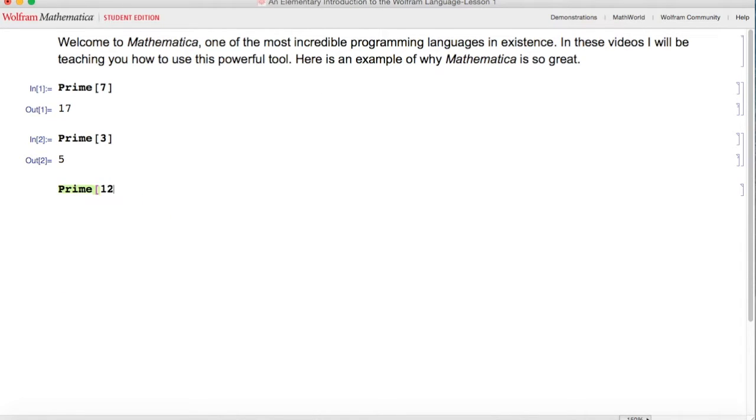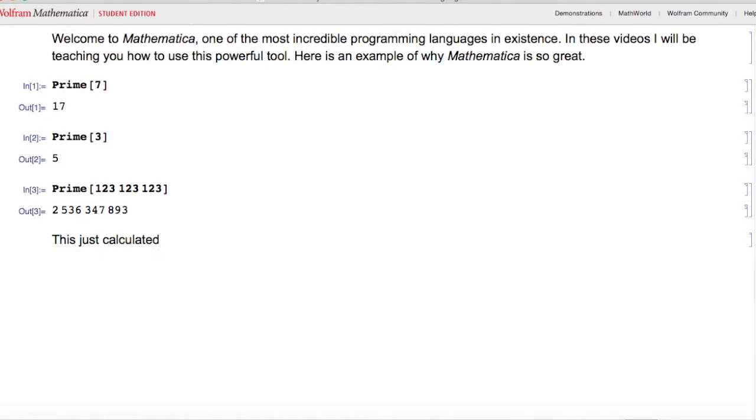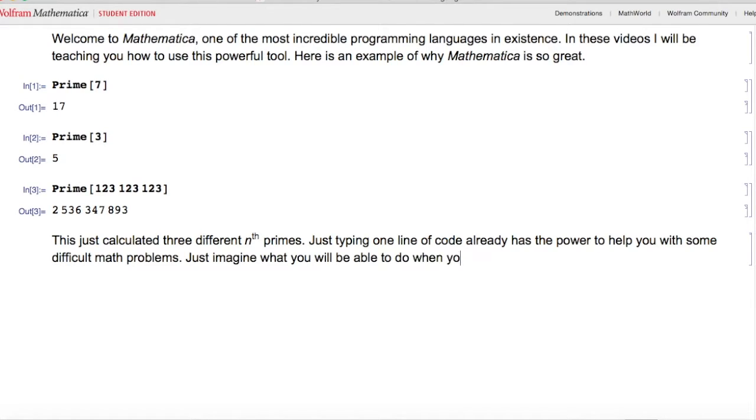Now I'm going to do prime of a much larger number, and as you can see, it works just as fast. This just calculated three different nth primes. Just typing one line of code already has the power to help you with some difficult math problems. Just imagine what you will be able to do when you fully know the Wolfram language.